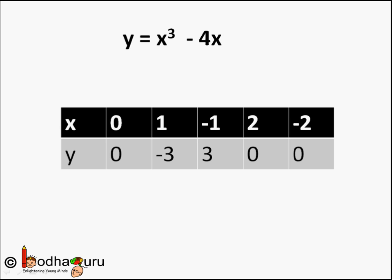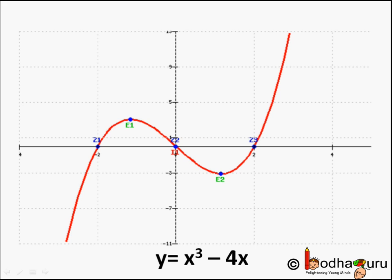We found two more zeros of this polynomial. So, we have already found three zeros. Are there any more zeros of this polynomial? Let us draw the graph first.